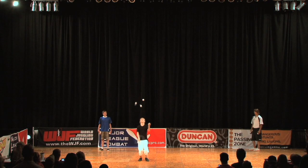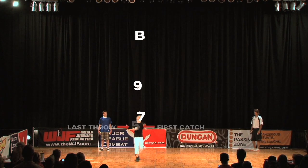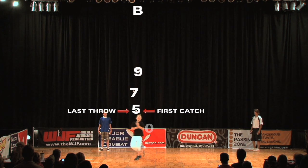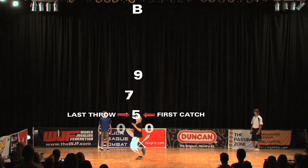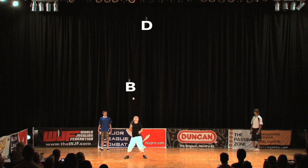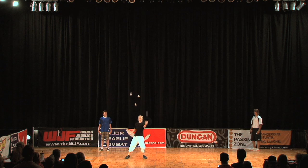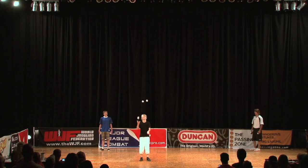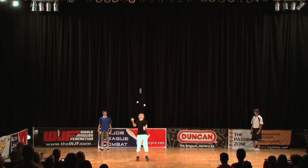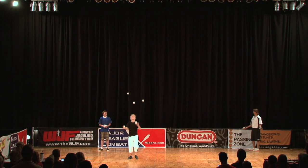So the last ball thrown is the first ball caught, the opposite of the order of catches in basic juggling patterns where all objects are caught in the same order that they are thrown in. So here it is in real time: DB9750000 and re-entry into 5 balls.